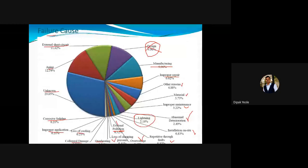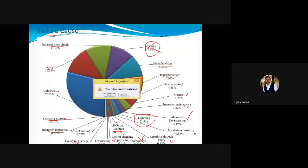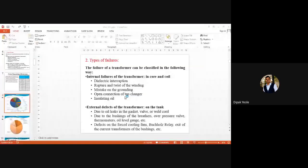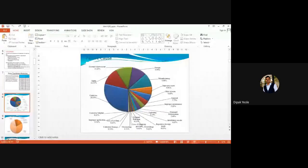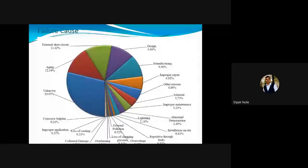The purpose of collecting this data is to predict which component needs the most focus. Without this data, we cannot predict which parameter may cause a failure. This is important data relating to the failure of a particular transformer.